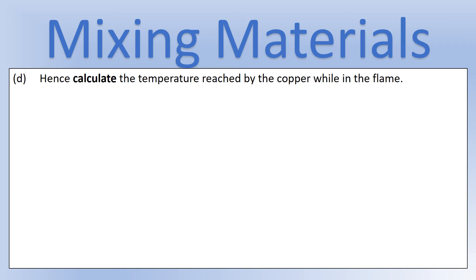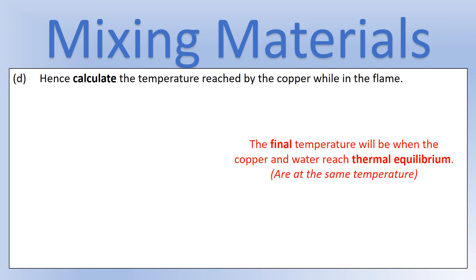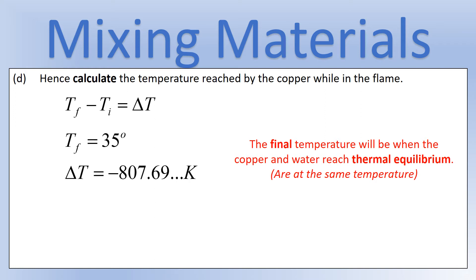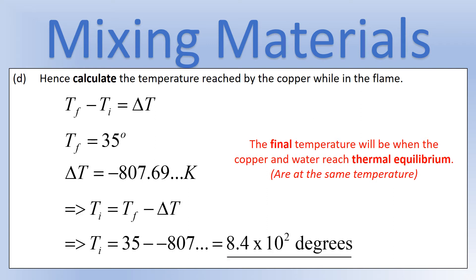Now work out the temperature of the Bunsen burner. The final temperature of the copper — when it reaches thermal equilibrium with the water — is 35 degrees. Since TF minus TI equals ΔT, and the change in temperature is −807 degrees, rearranging gives the initial temperature. This tells us the Bunsen burner is at approximately 8.4 × 10² degrees, or 840 degrees Celsius.